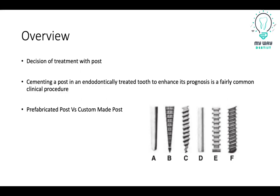We have two types of post: the prefabricated post, which comes with different materials, shapes, and systems, and we have the custom-made post. The decision between them — whether to use the prefabricated or the custom-made — depends on many factors, such as the location of the tooth, the geometry of the canal itself, the force types and the amount of load that the tooth will receive.